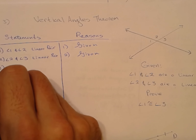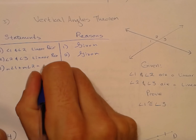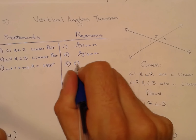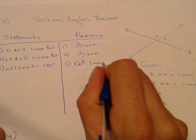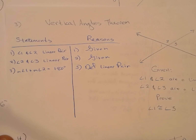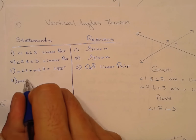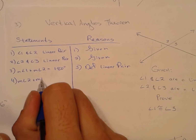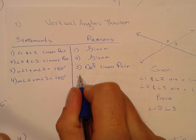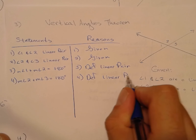What does it mean to be a linear pair? That means the measure of angle one plus the measure of angle two add together to be 180 degrees. Same thing with the other two angles: the measure of angle two plus the measure of angle three equals 180 degrees. That's definition of linear pair.